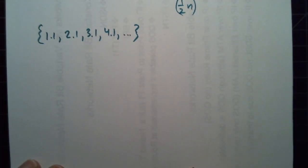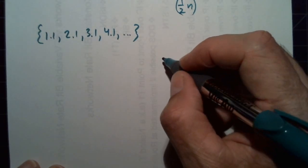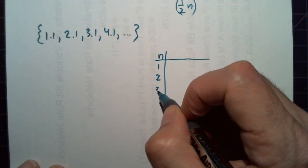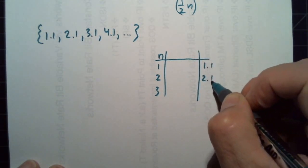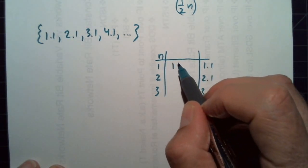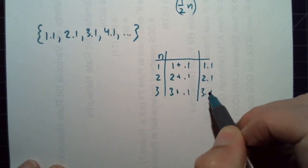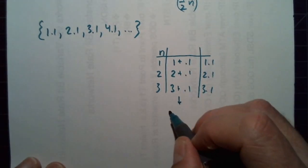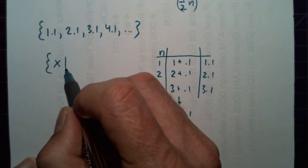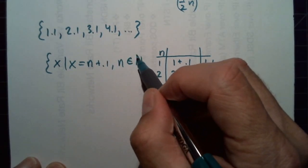Pause the video and try that one. You can use a table to help find the expression. We're not going negative, so start with natural numbers. We need to generate 1.1, 2.1, 3.1, ... What do we do to n to get there? We go plus 0.1 each time: 1 + 0.1, 2 + 0.1, 3 + 0.1. So the expression is n + 0.1, and we write: x such that x equals n + 0.1, where n is a natural number.